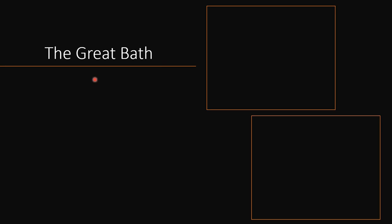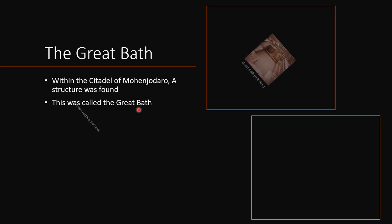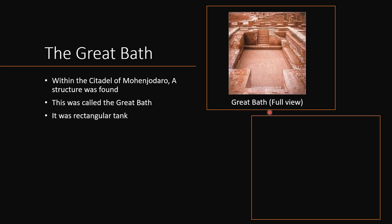Next, we will learn about the Great Bath. Within the citadel of Mohenjo-Daro, a structure was found called the Great Bath. It was a rectangular tank, as you can see here — it appears cut by stairs in the image, but it is actually a rectangular tank.